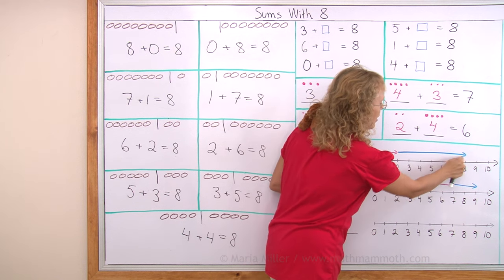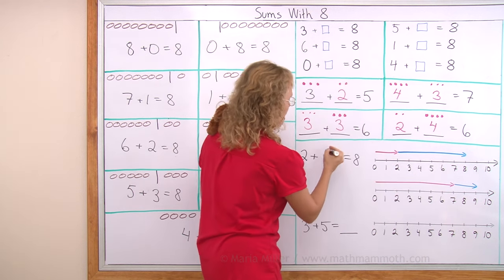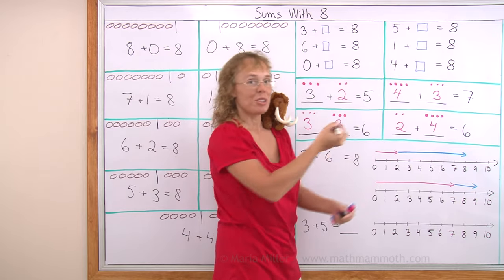1, 2, 3, 4, 5, 6. It is 6 units long. So this is 2 plus 6 equals 8.